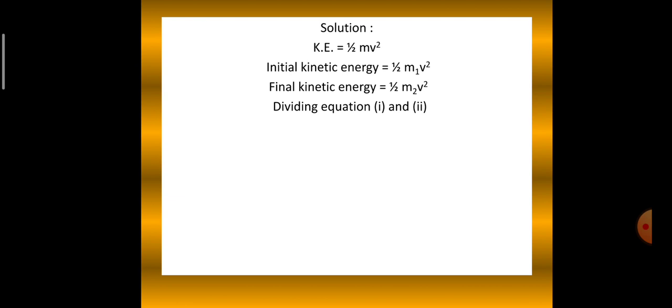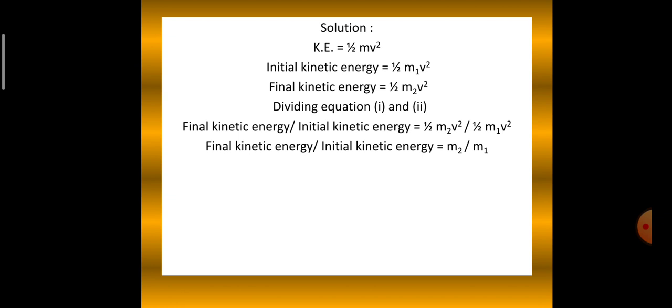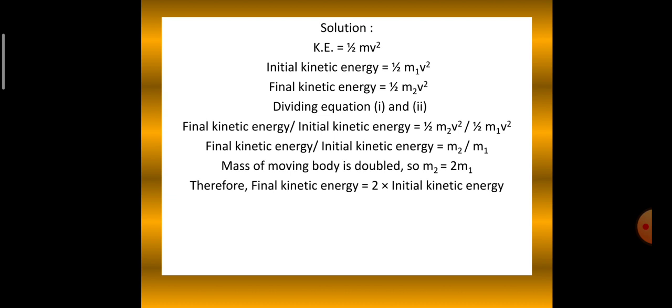So now we divide the equation for kinetic energy 1 and 2. So final kinetic energy divided by initial kinetic energy is equal to half m2 v square divided by half m1 v square. Now here both the half get cancelled, they are common. v square are also common, they get cancelled. So what remains is m2 divided by m1. So of course the relation is between mass. The question is if the mass is doubled what will happen to the kinetic energy? So the mass of the moving body is doubled. So m2 is equal to twice m1. So final kinetic energy is equal to two times initial kinetic energy because the mass is doubled.